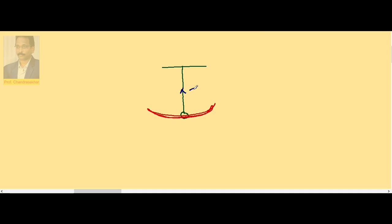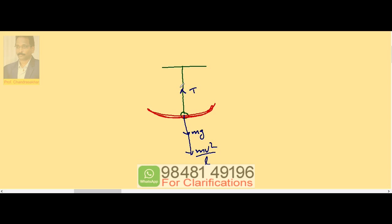Here T is upwards, weight mg downwards, and centrifugal force MV squared by L. If L is the length of the pendulum, the maximum tension possible at the mean position is equal to mg plus MV square by L.